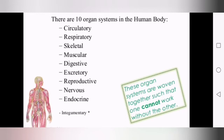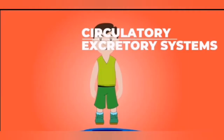What are the organ systems usually present in our body? Circulatory, respiratory, skeletal, muscular, digestive, excretory, reproductive, nervous and endocrine system. In total there are 10 organ systems, and today we are going to learn two systems — circulatory and excretory system.